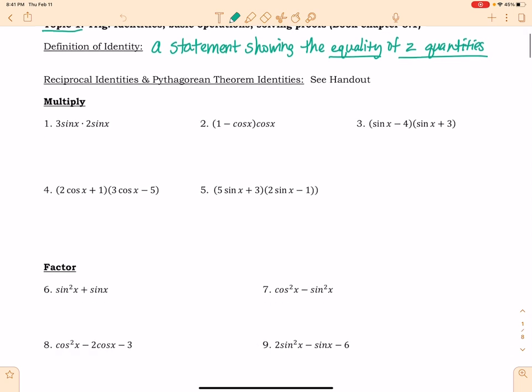So the first thing we need to do is we need to learn how to multiply and factor expressions with trig identities and trig functions in them. So if you'll notice in this very first example, we're going to multiply these. Now if you'll think about this, the way multiplication works, if we were going to multiply 3x and 2x, we would get 6x squared. So something similar is going to happen here.